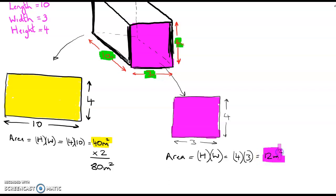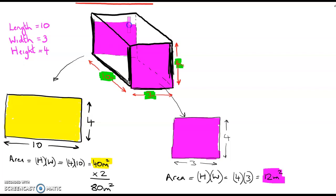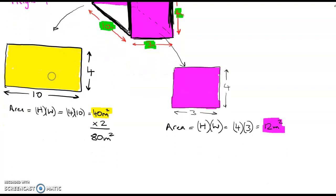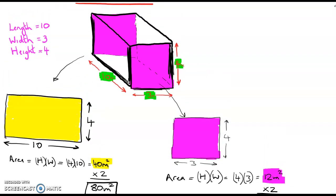The area of that side is height by width: 4 by 3, which is 12 meters squared. Just like before, there's another side — the back — that has the exact same dimensions. So there are two of those rectangles, and I multiply 12 by 2 to get 24 meters squared. I'll now delete those colors to move on to the last face.